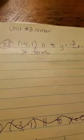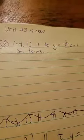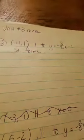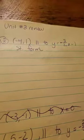On problem 33, they gave you the point (-4, 1), and they want it parallel to the line y equals negative 3 halves x minus 1, and they want it in standard form. Alright, so because we want it parallel,